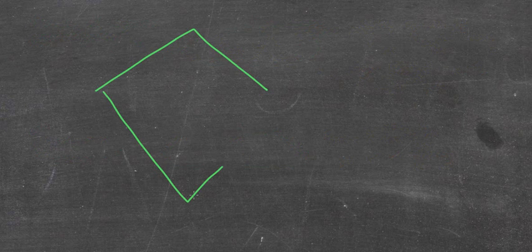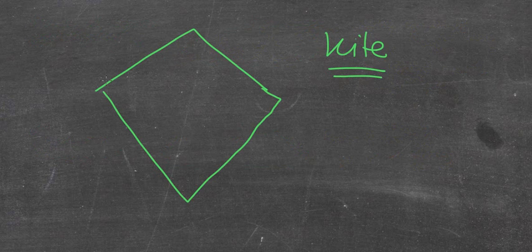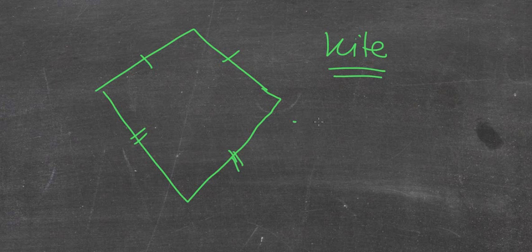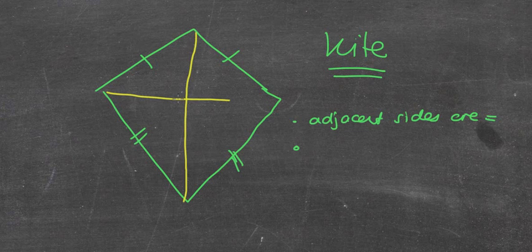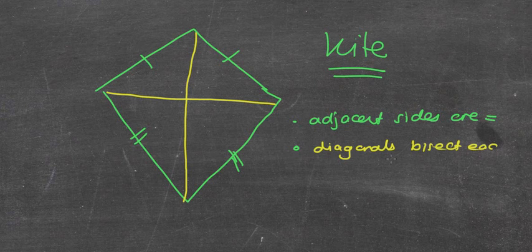The very last one we're going to look at is the kite. What to know about a kite: we say the adjacent sides — the sides directly next to each other — adjacent sides are equal. We can also say that the diagonals, like the rhombus and the square, bisect each other at 90 degrees, at a right angle.